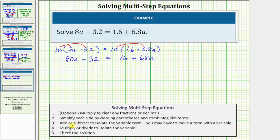Step two, simplify each side by clearing parentheses and combining like terms. Both sides are simplified, so we move to step three.